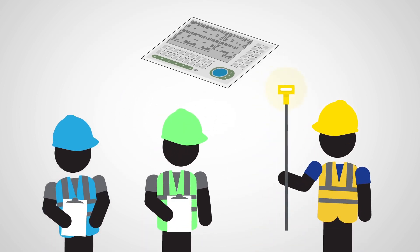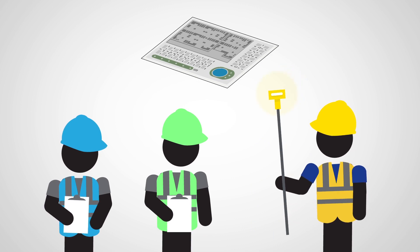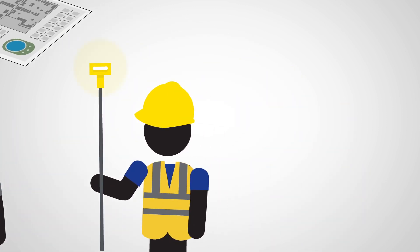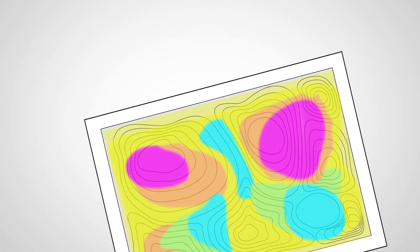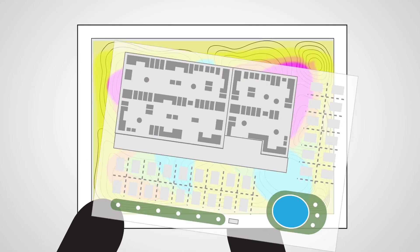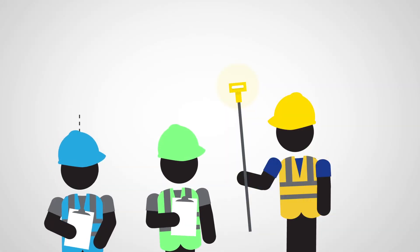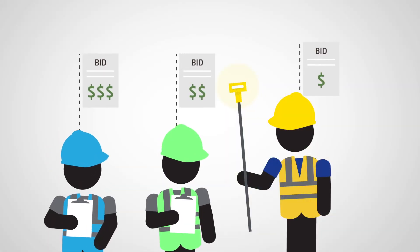Now contractors are brought in to do a take-off, or estimate of what it'll cost for them to do the job. Using a grade management system, this contractor was able to topo the site himself to verify the engineer's quantities and calculate a more accurate estimate to enable him to prepare a competitive bid and win the contract.